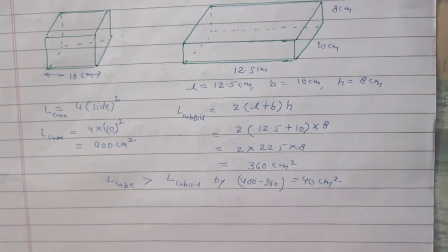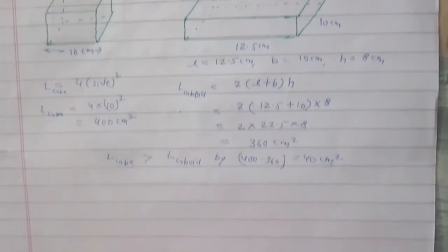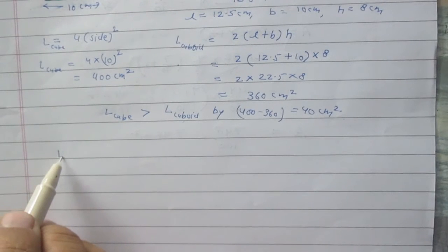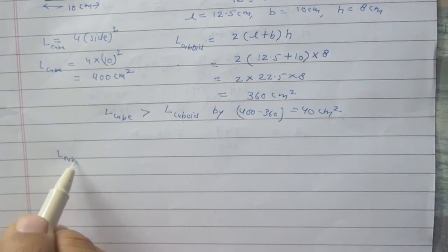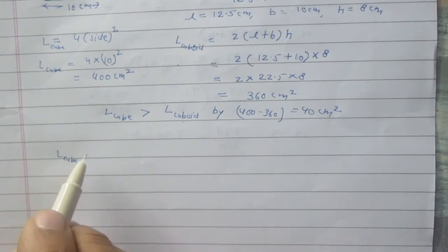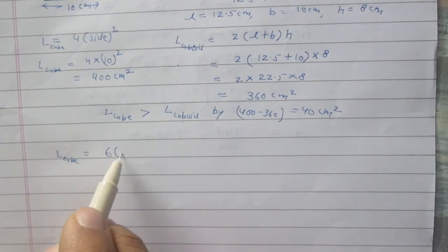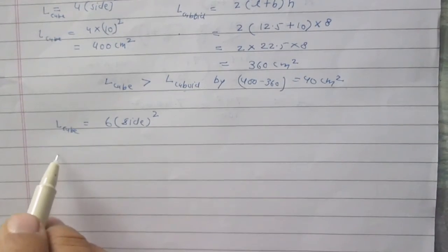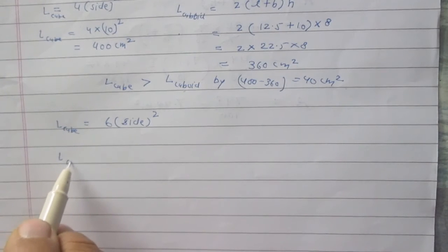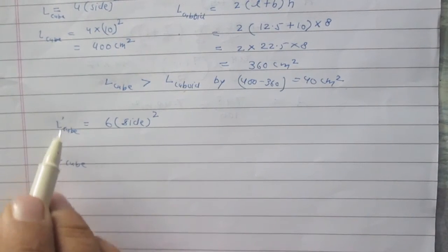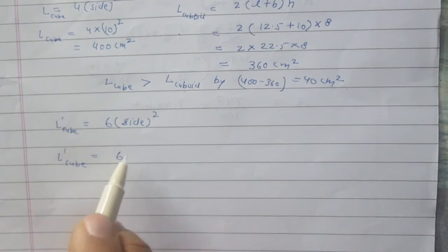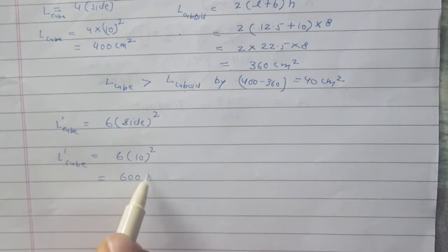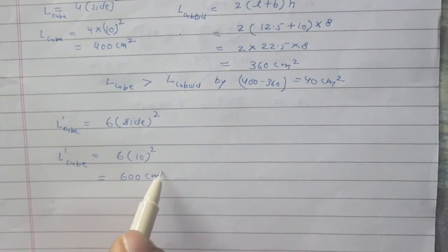Now consider total surface area. Total surface area of a cube is 6 times its side squared. So, total surface area of the cube is 6 times 10 squared, which is 600 cm².